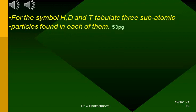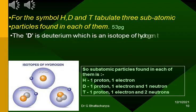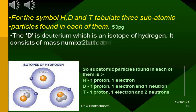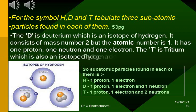For the symbol H, D and T tabulate three subatomic particles found in each of them. The D is deuterium which is an isotope of hydrogen. It consists of mass number 2 but the atomic number is 1. It has one proton, one neutron and one electron. The T is tritium which is also an isotope of hydrogen. But H has one proton and one electron.